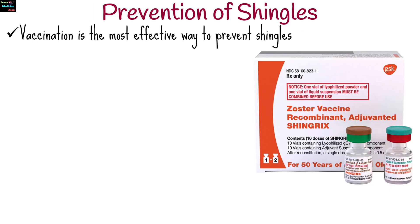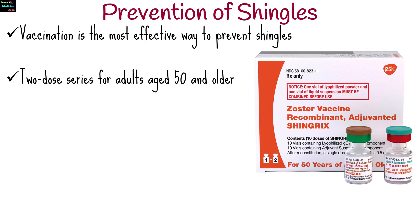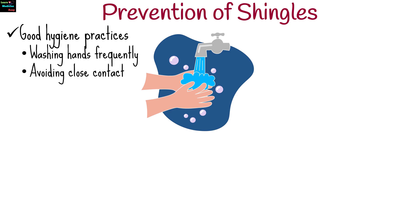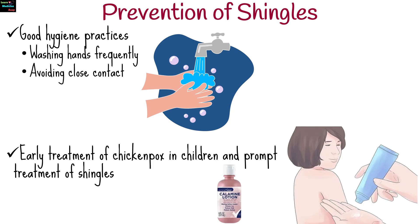Vaccination is the most effective way to prevent shingles. The shingles vaccine, usually a two-dose series, is recommended for adults aged 50 and older, and can also reduce the risk of postherpetic neuralgia and other complications. Good hygiene practices, such as washing hands frequently and avoiding close contact with individuals who have active shingles, can help prevent transmission. Early treatment of chickenpox in children and prompt treatment of shingles can also help reduce the risk of complications.